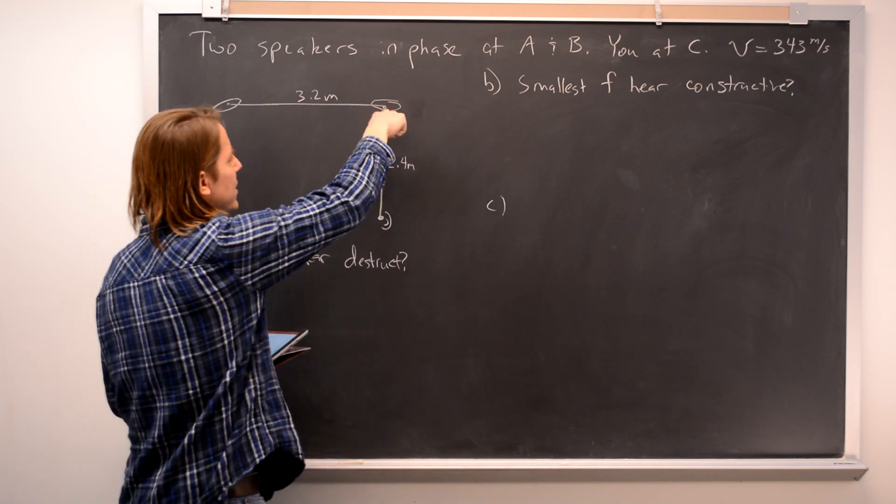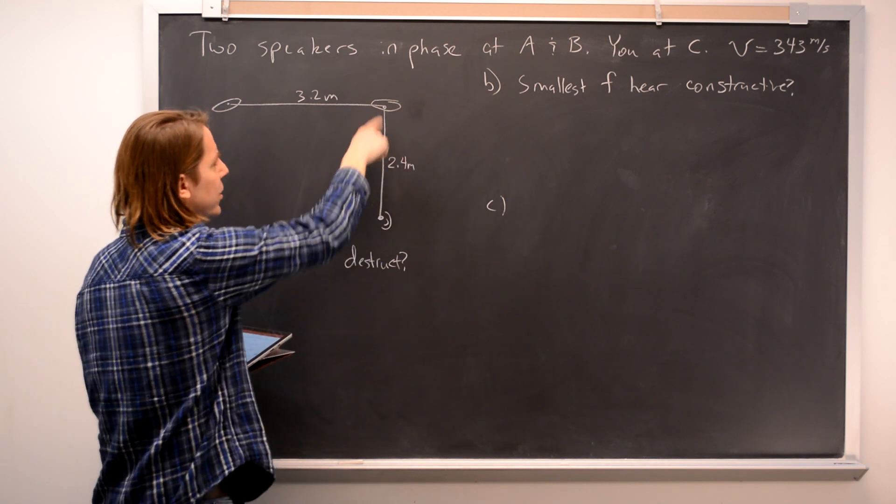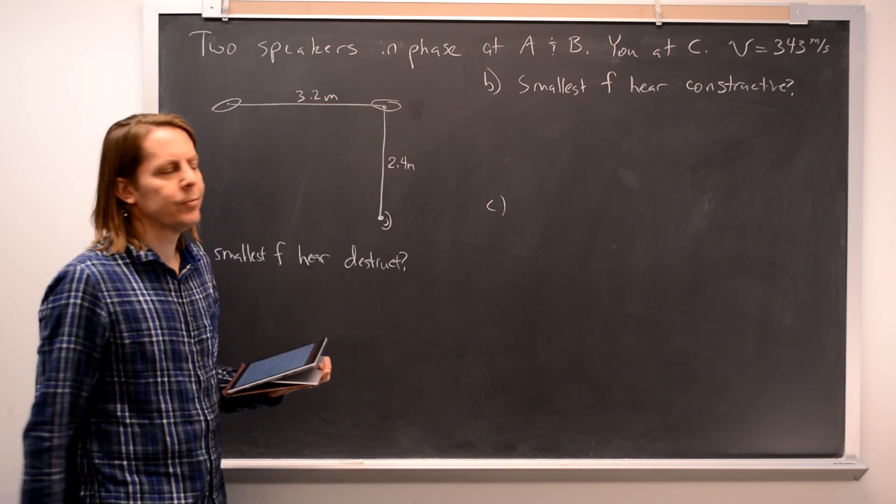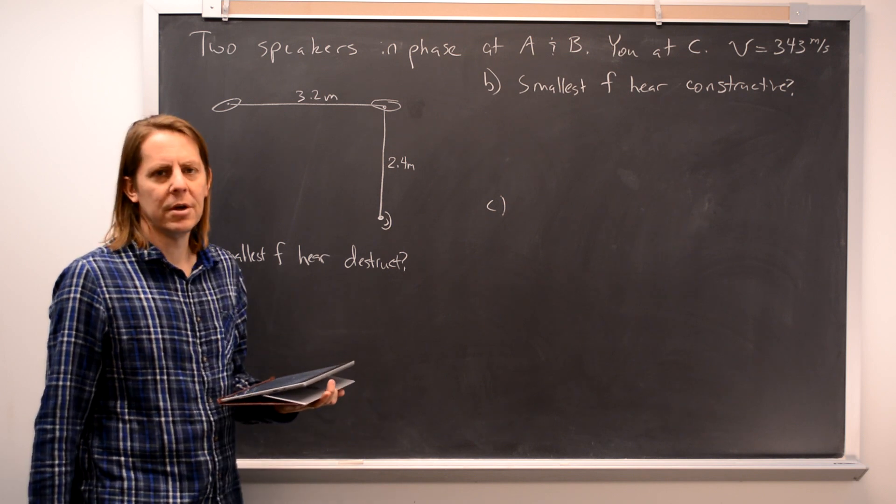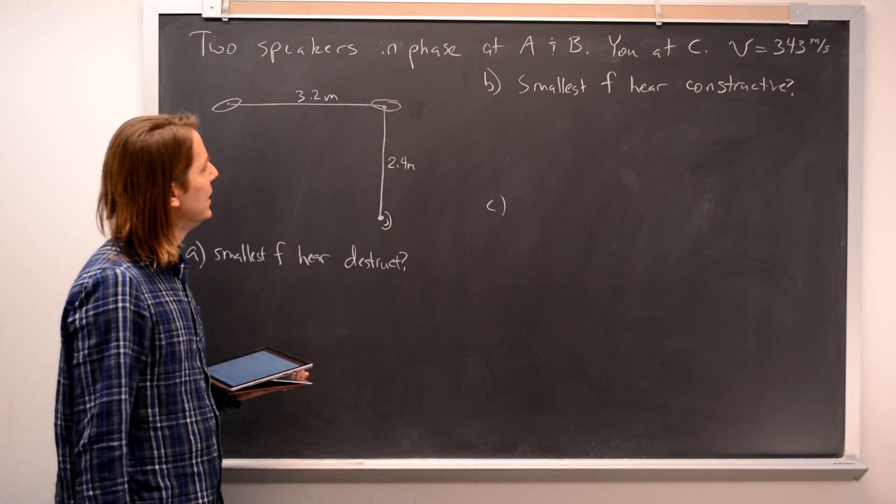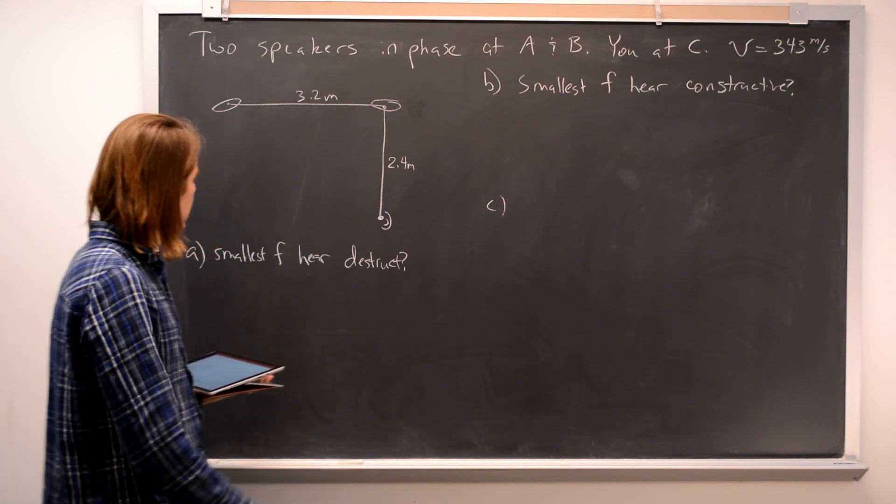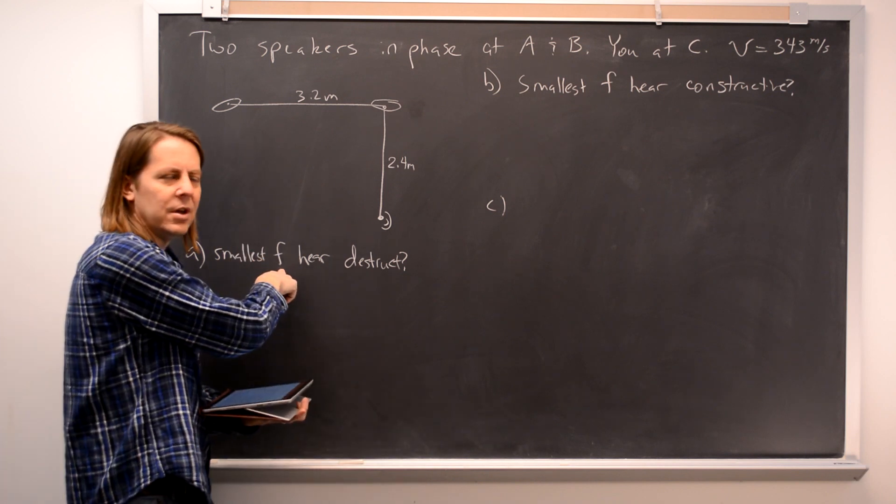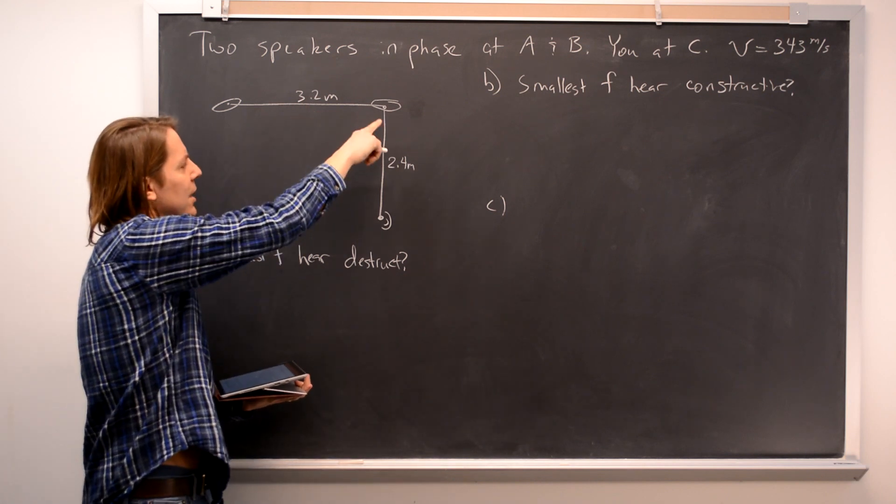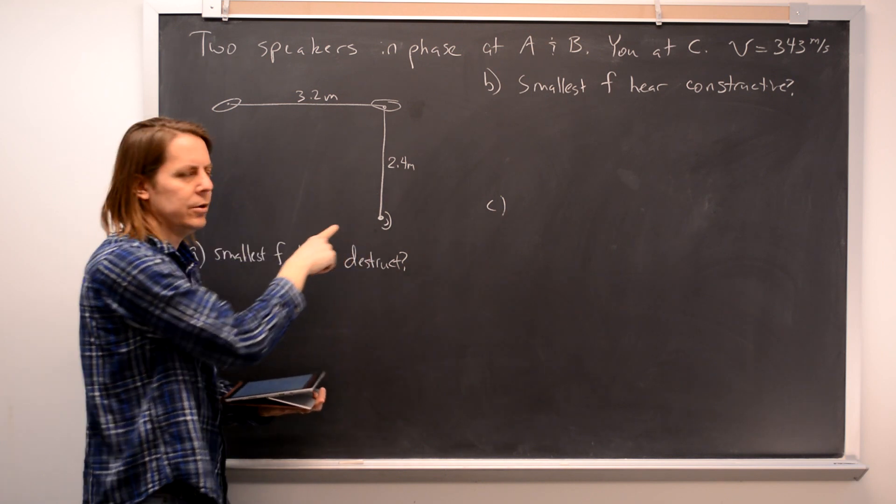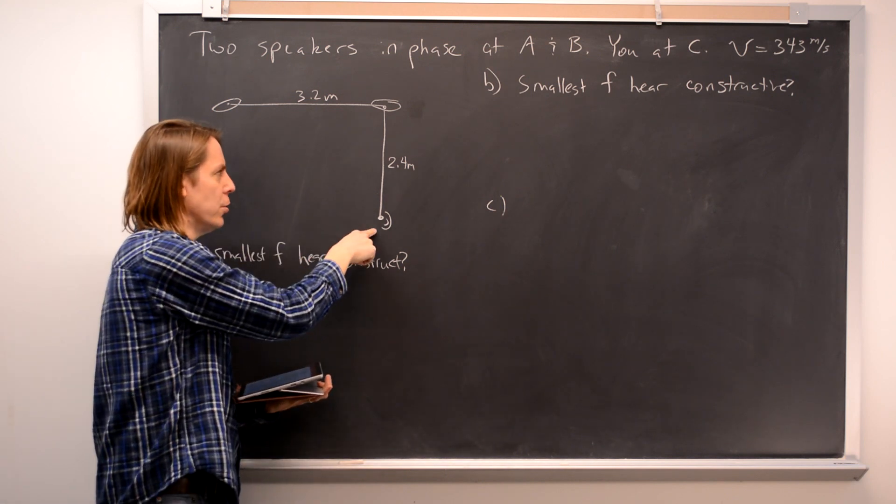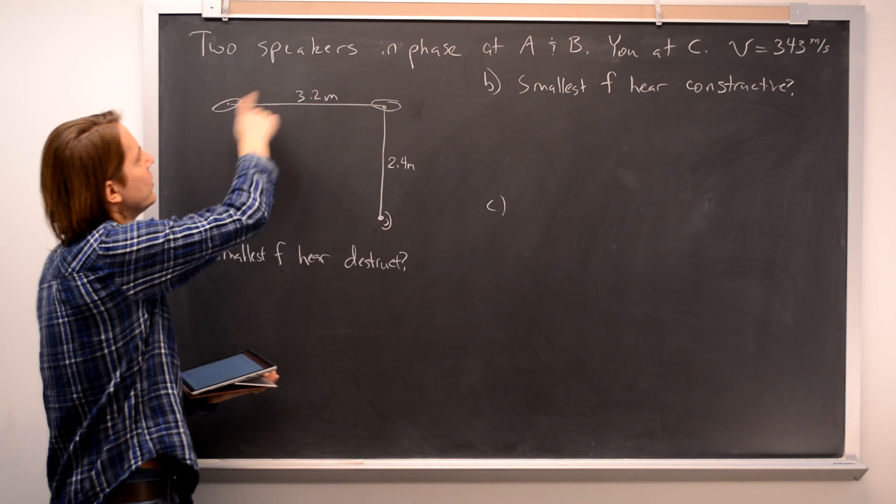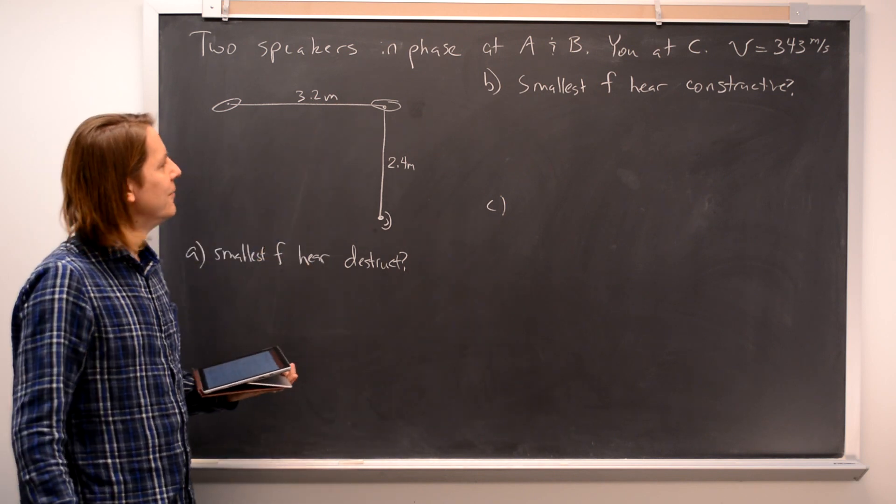And you're at C. You're down 2.4 meters from that speaker. Speed of sound is 343 meters per second, as always. And the question is, what's the smallest frequency that these speakers can be at that will give you destructive interference at your ear? And they're at the same frequency, in addition to being in phase.